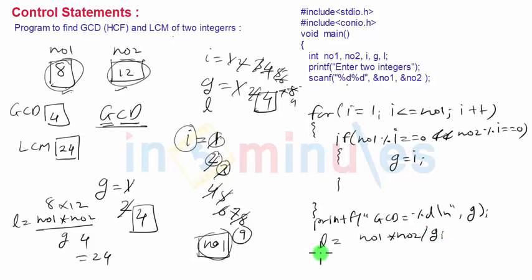Then print L also. So print L using printf LCM is equal to L. And then curly bracket of main finishes. So that is the entire program.